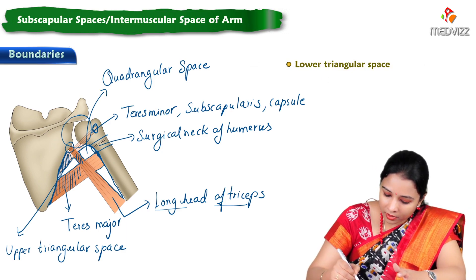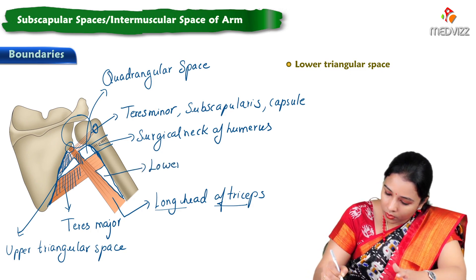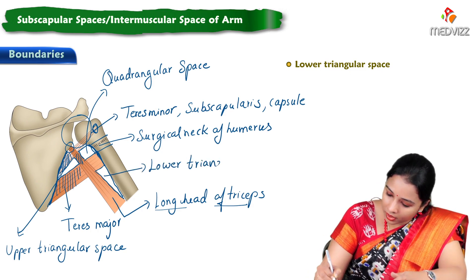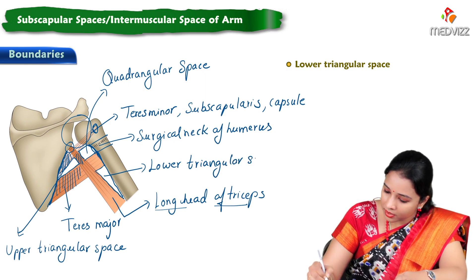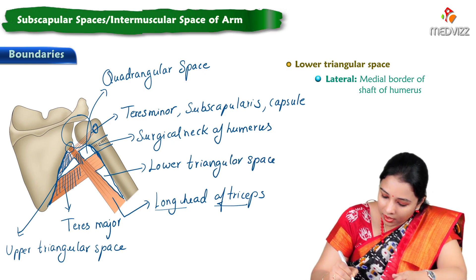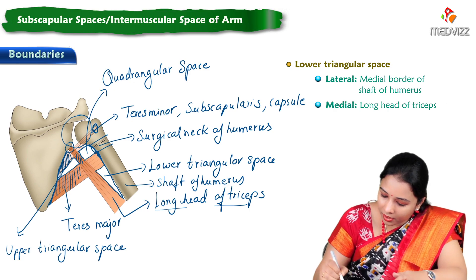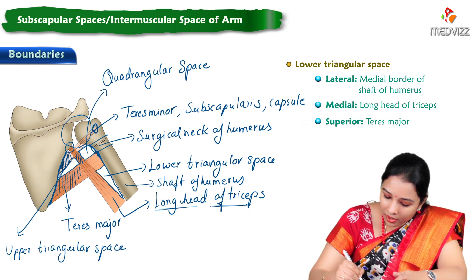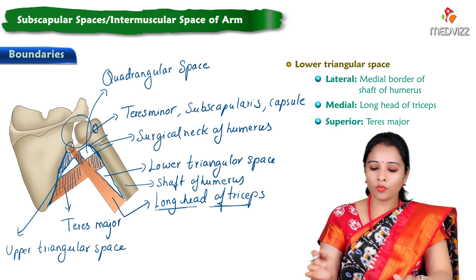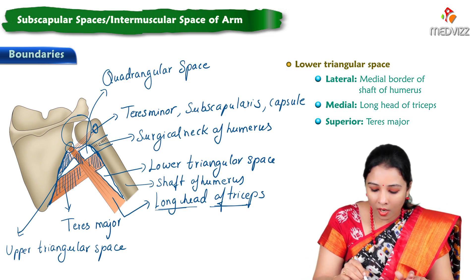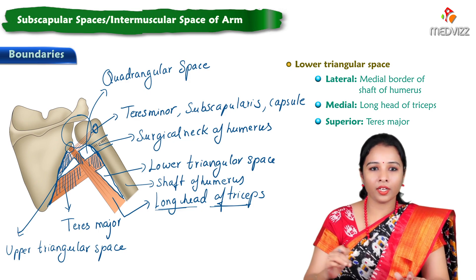The lower triangular space is bounded laterally by the shaft of the humerus, medially by the long head of triceps, and superiorly by teres major. These are the boundaries of the quadrangular space, upper triangular space, and lower triangular space.